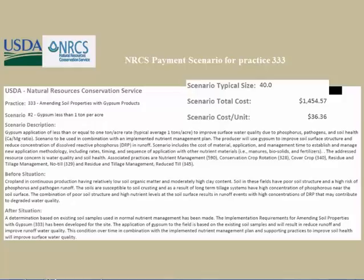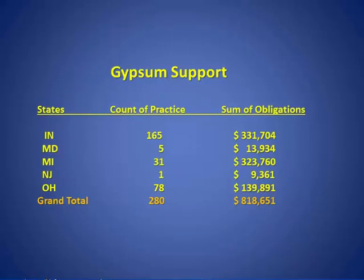This is the payment schedule. I've been told that payment schedules are done on a regional basis and not on a state-by-state basis. In the Midwest region, they've come up with a payment standard of basically $36 per acre for gypsum applications. As of data from December 2016, there have been about 280 contracts issued by NRCS for the practice standard, adding up to about $818,000 that they have given out to support this practice.